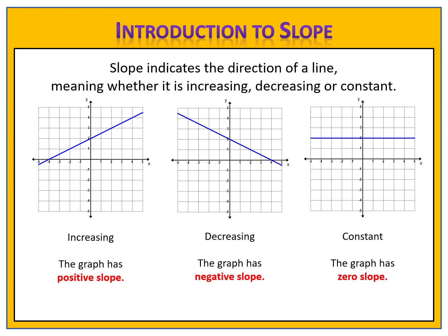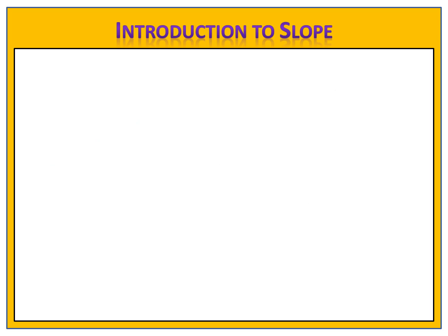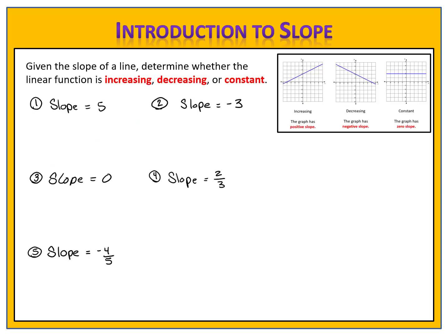Let's apply this. Here we see five slopes that are given to you. For each one, determine whether the line, or the graph, of the linear function will be increasing, decreasing, or constant. Please pause the video here and come back when you're ready to compare answers.